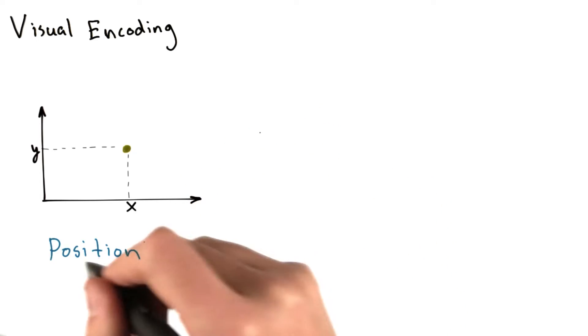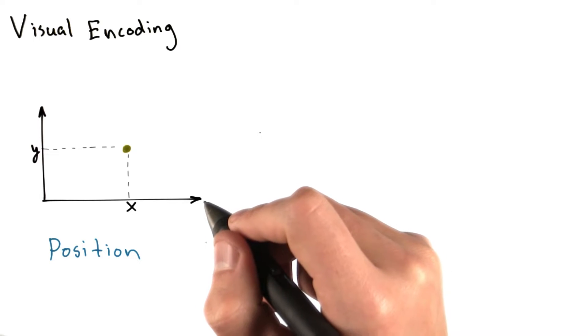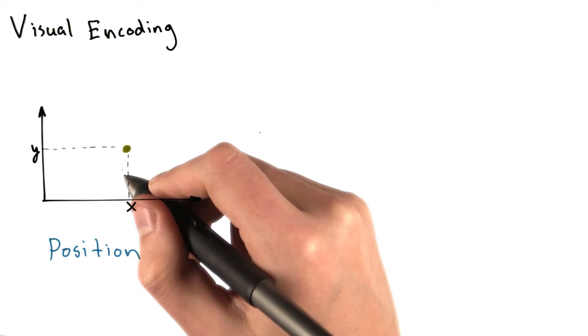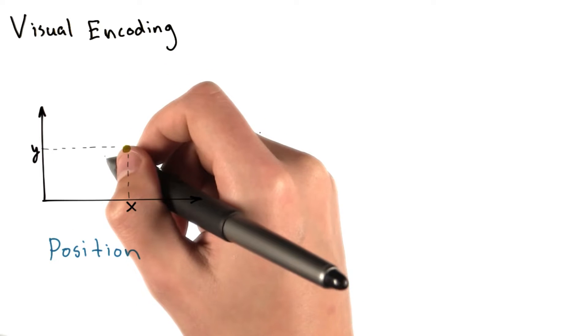The first one that we're going to discuss is position. When using position as a visual cue, you compute value by looking at the position of a point compared to the position of others in the same space or coordinate system. Here, this would translate to this point's x and y coordinate.